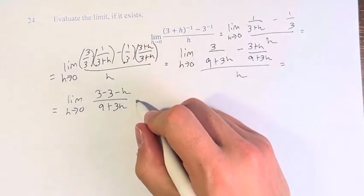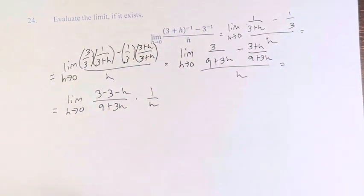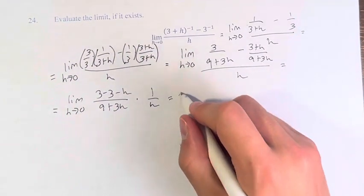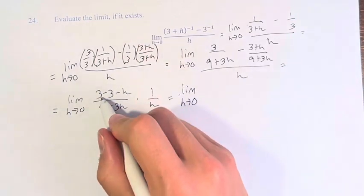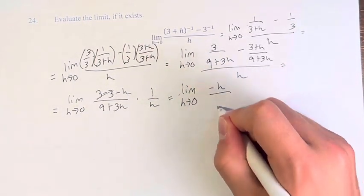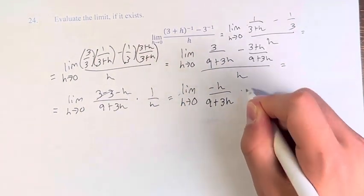And then instead of dividing by h I'm going to multiply by 1 over h. This is going to give us the limit as h approaches 0 of 3 minus 3 cancels, negative h over 9 plus 3h times 1 over h.